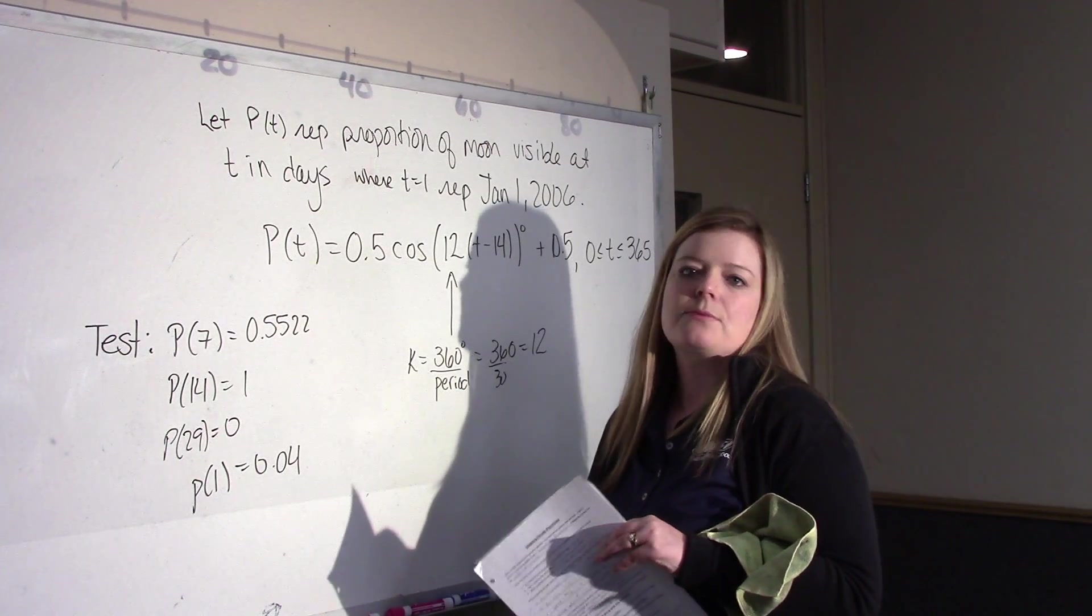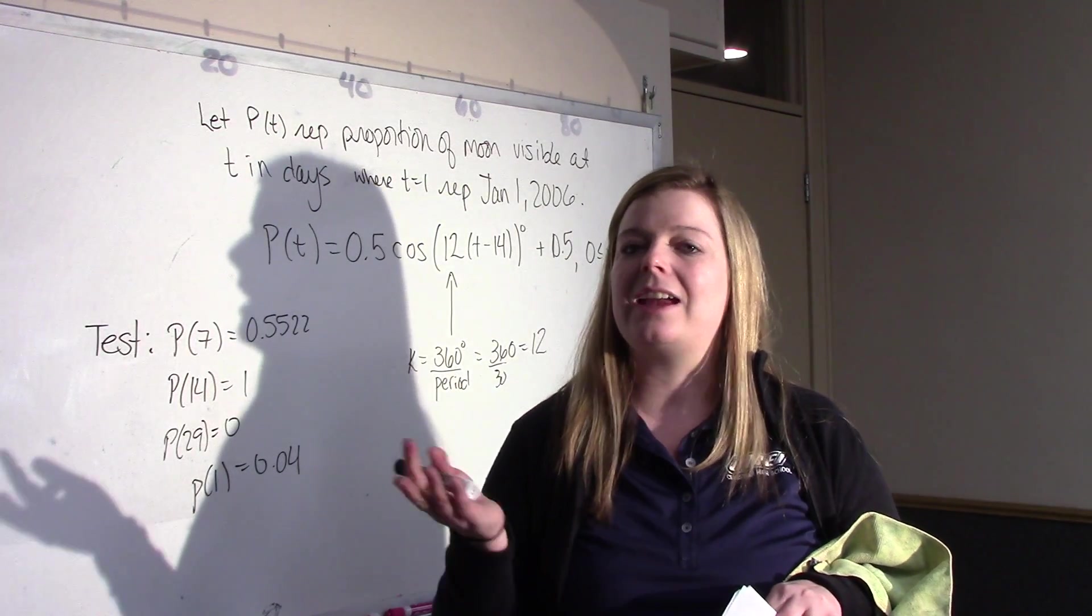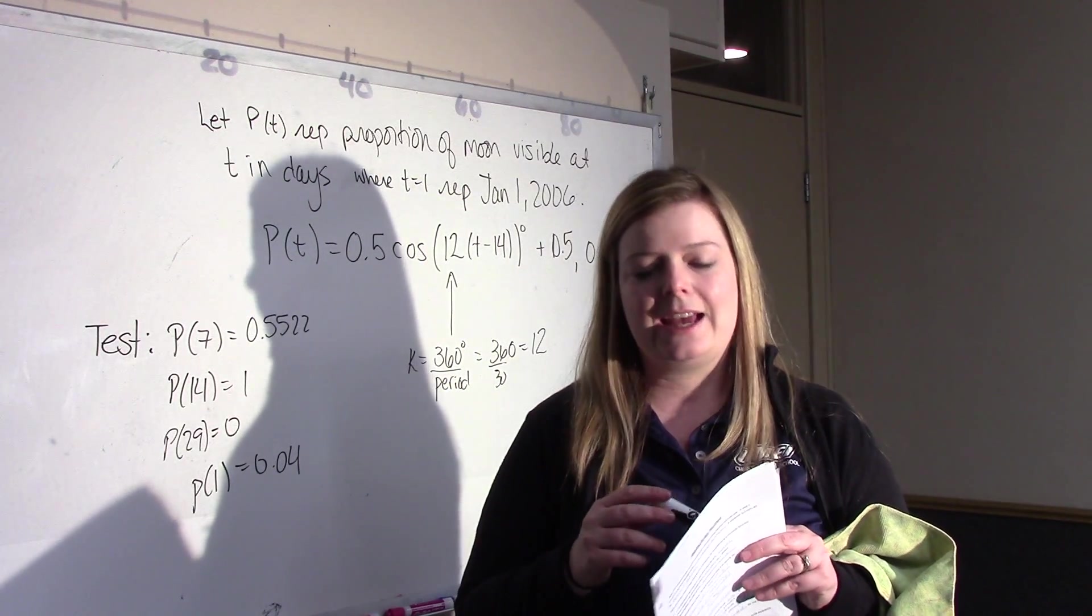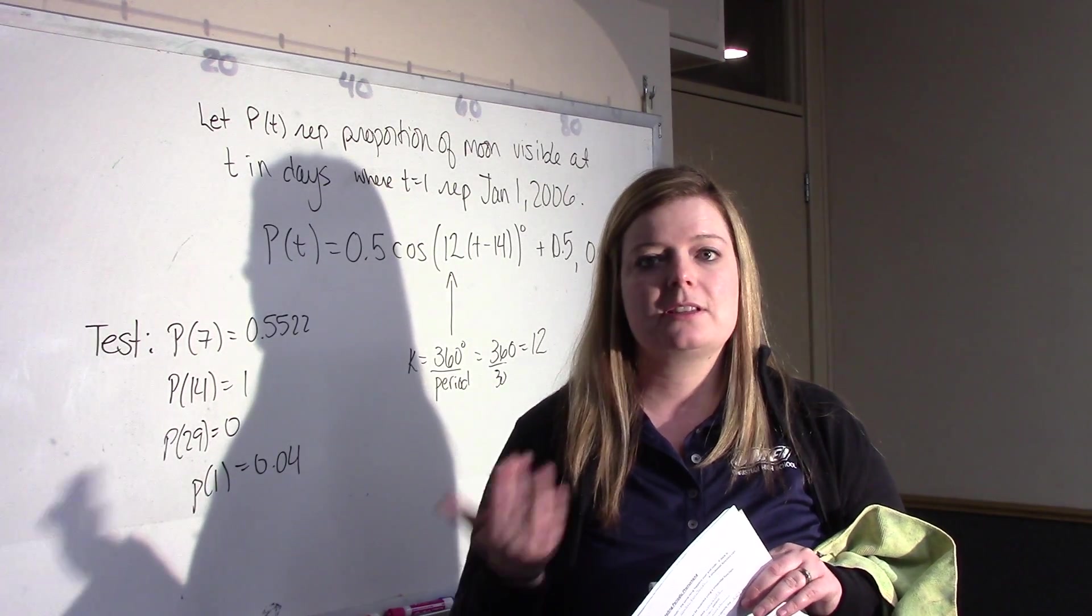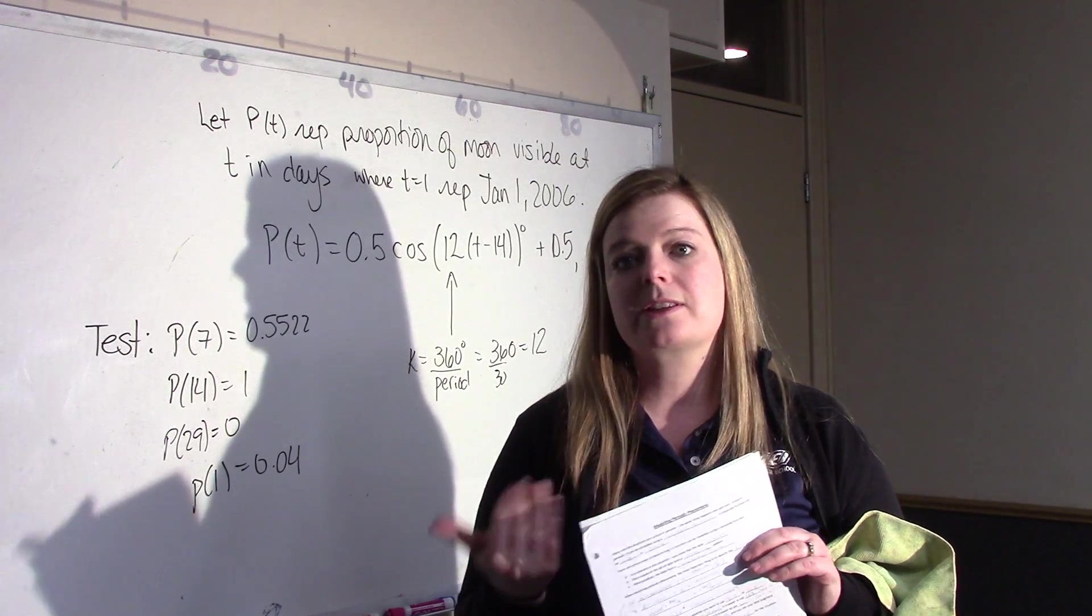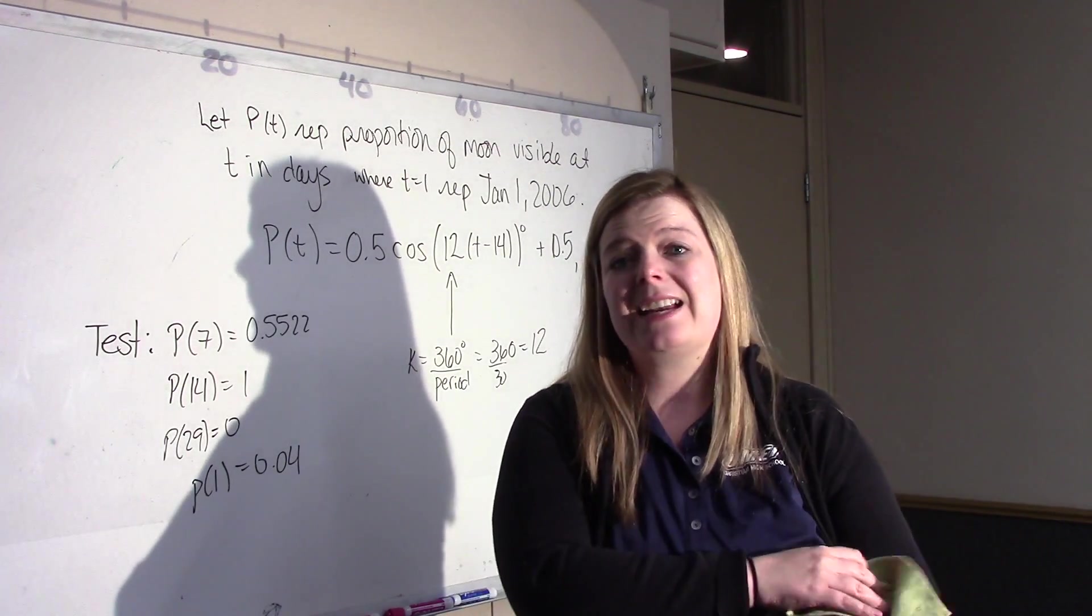The thing is, is that this is what happens when you apply math to real life. Math is perfect. Real life is not. So, you get data that isn't always exactly perfect. But, that's okay. The model is still useful to make predictions and to discuss what's going on with the proportion of the moon.